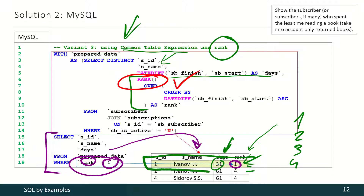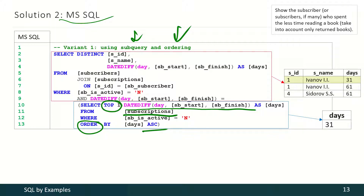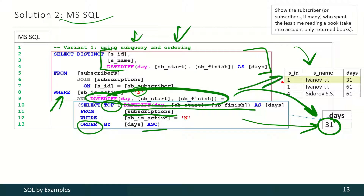With Microsoft SQL Server we may follow the same approach with subquery and ordering. We select information about time period lengths from the subscriptions table, order that information in ascending direction, and take only the first record — that gives us the shortest period. Then we select this information and apply a condition that a subscription should not be active and its length should be equal to that shortest length we already found. That is how we get our final result.